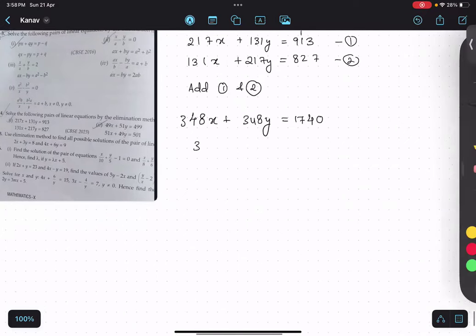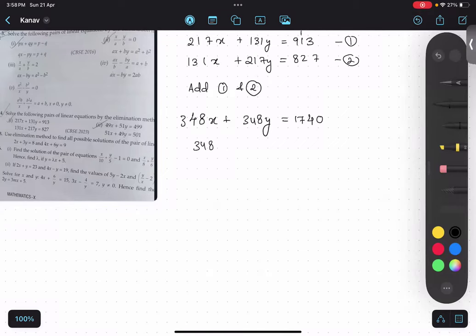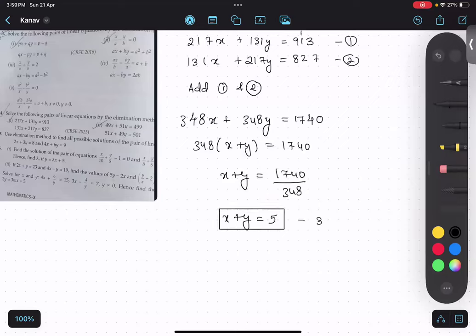Now over here, if I take 348 common, x plus y, and 1740, so x plus y equals to 1740 divided by 348. Let us quickly check whether it is completely divisible, then we will do it. 1740 divided by 348, so if it is completely divisible by 5, chances are it will be divisible.